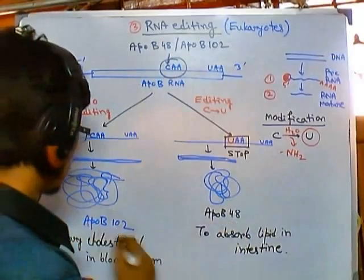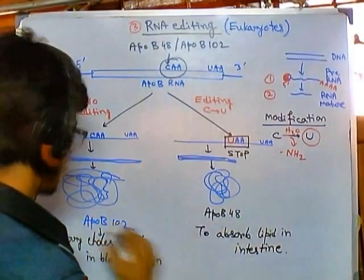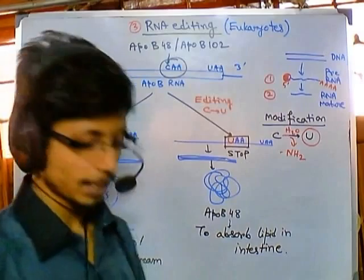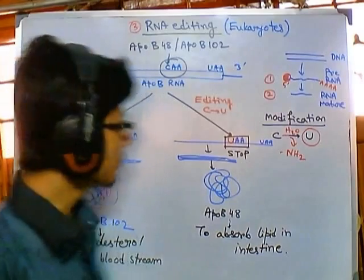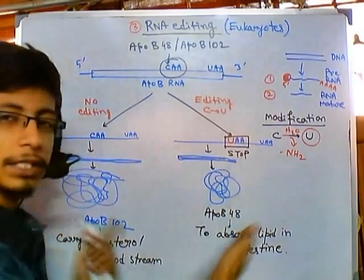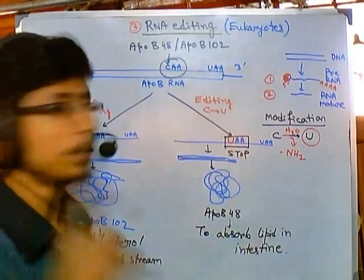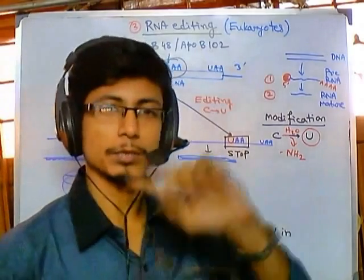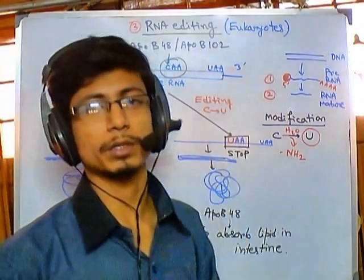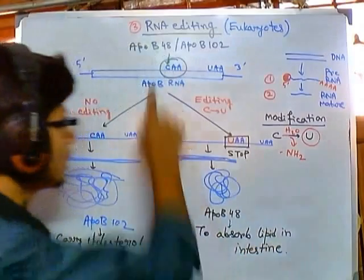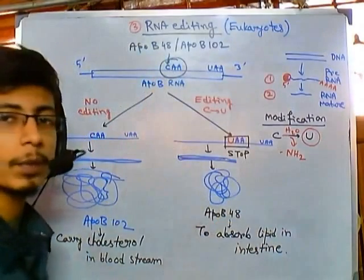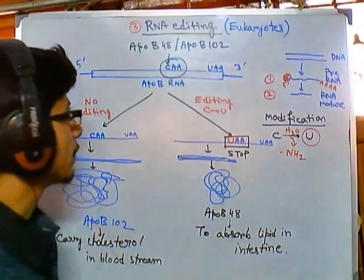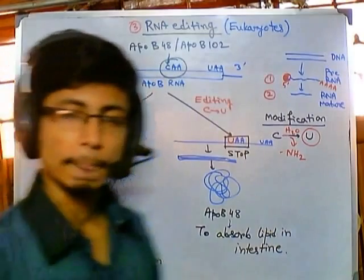The full structure of ApoB100 folds to perform the function of carrying cholesterol in the bloodstream. But ApoB48 functions differently — to absorb lipid in the intestine. So the functionality changes. Due to this editing, we get two different proteins having two different functions. From one gene it is possible to generate two different versions of protein having two different functions — that's the beautiful example of RNA editing.